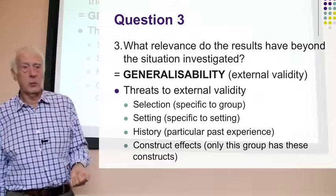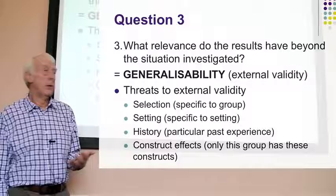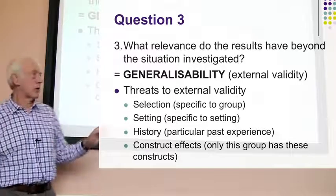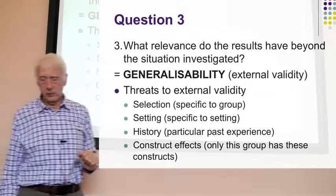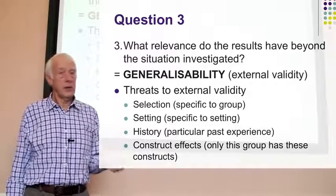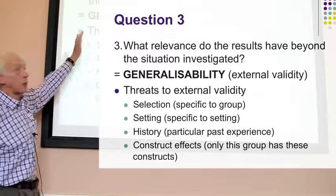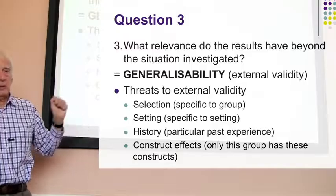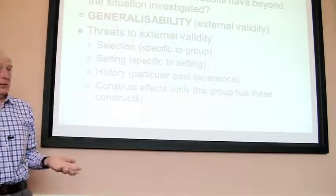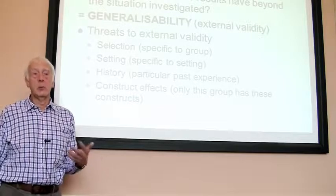There's also a construct effect where only certain groups think in certain kinds of ways. All of these threats amount to the fact that the group being studied is not typical in some important way of the general population, producing a bias in results. Good quality research is generalisable; poor work is not generalisable because some threat to typicality exists.